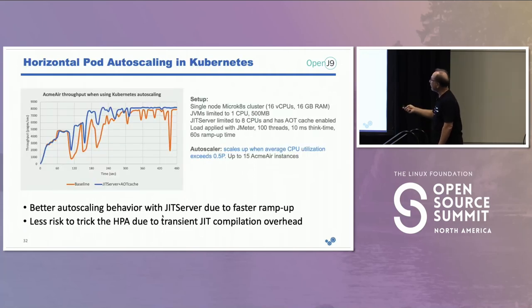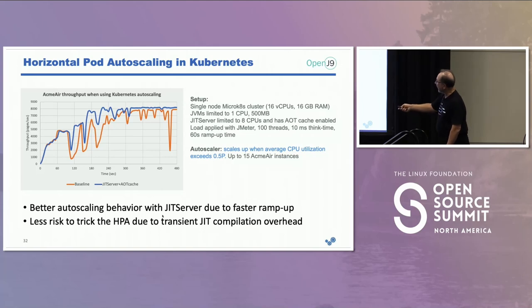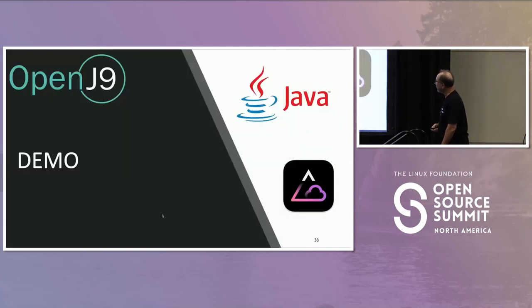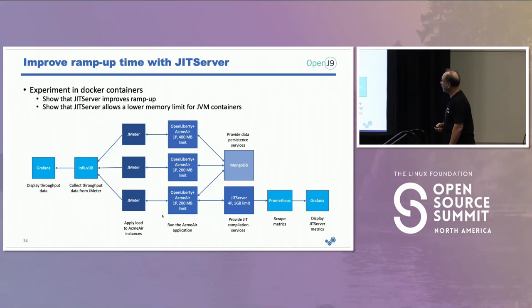Here's an example of auto-scaling: with the JIT server shown in blue, the dips aren't as severe and it ramps up a lot faster. Let me show you a quick demo.